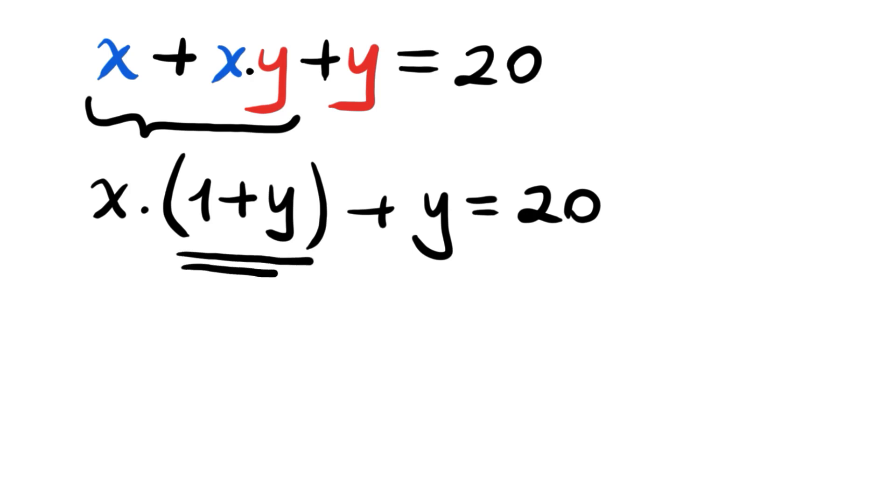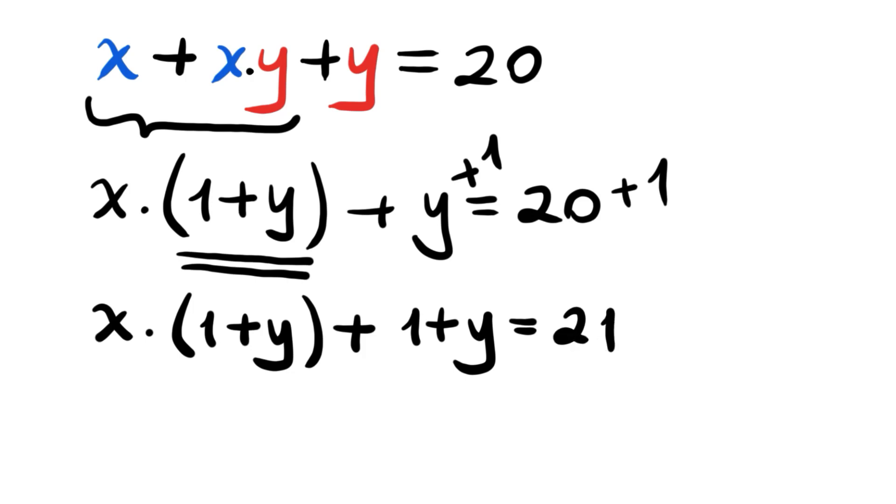And now we have X times 1 plus Y, plus another 1 plus Y, is equal to 21. And grouping this one, 1 plus Y times X plus 1 is equal to 21.